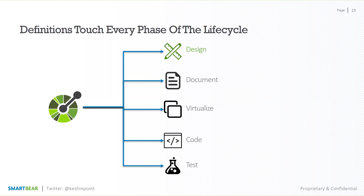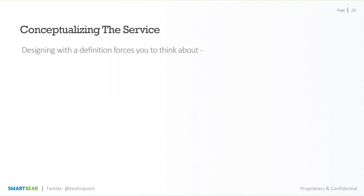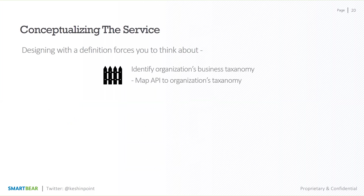Let's start talking about how the OpenAPI specification can actually help you in your design. Designing an API even before anything is started actually forces you to think about a couple of things. It's very important to start thinking about what is your business's taxonomy — it's not a technology thing. We're moving away from a data-driven approach to a more consumer-focused, business-friendly approach.